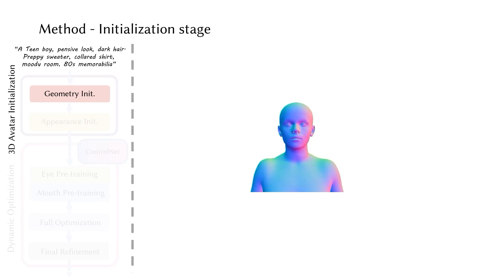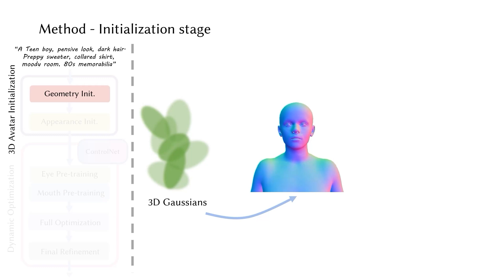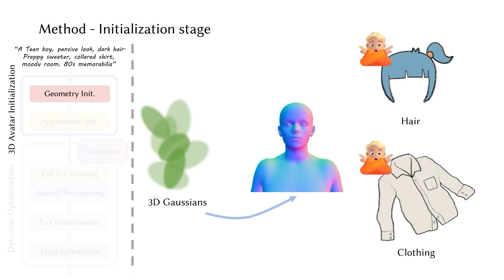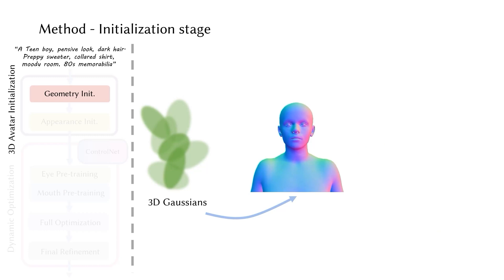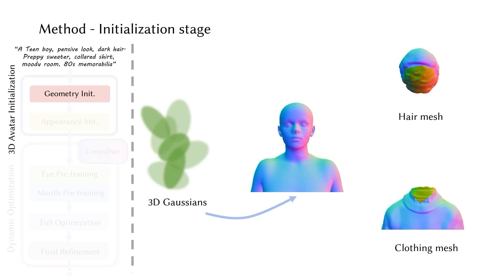To initialize the geometry, a straightforward approach is to directly rig the 3D Gaussians onto the SMPLX model. However, SMPLX cannot effectively represent assets such as hair and clothing, which are essential for achieving a realistic 3D avatar. To address this limitation, we propose to generate high-quality hair and clothing meshes to provide additional geometric information.